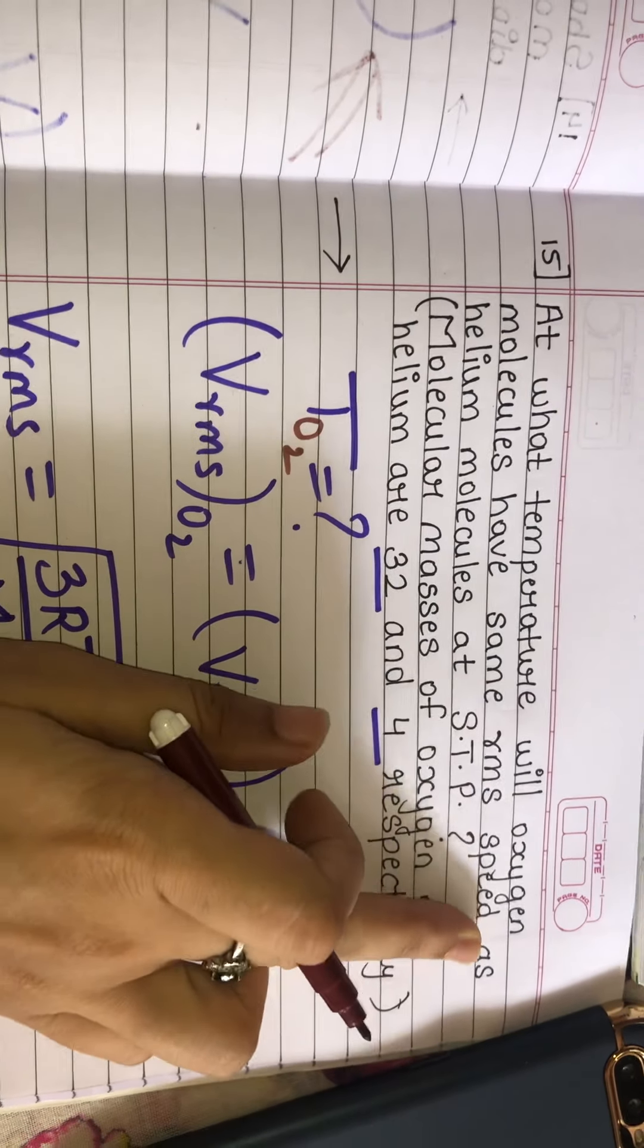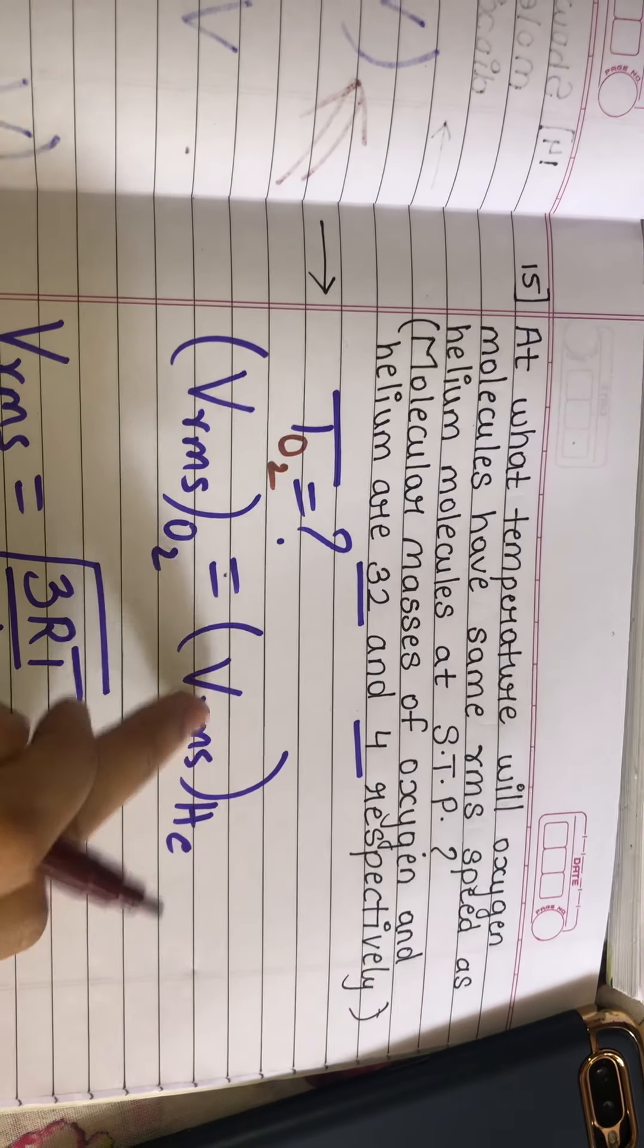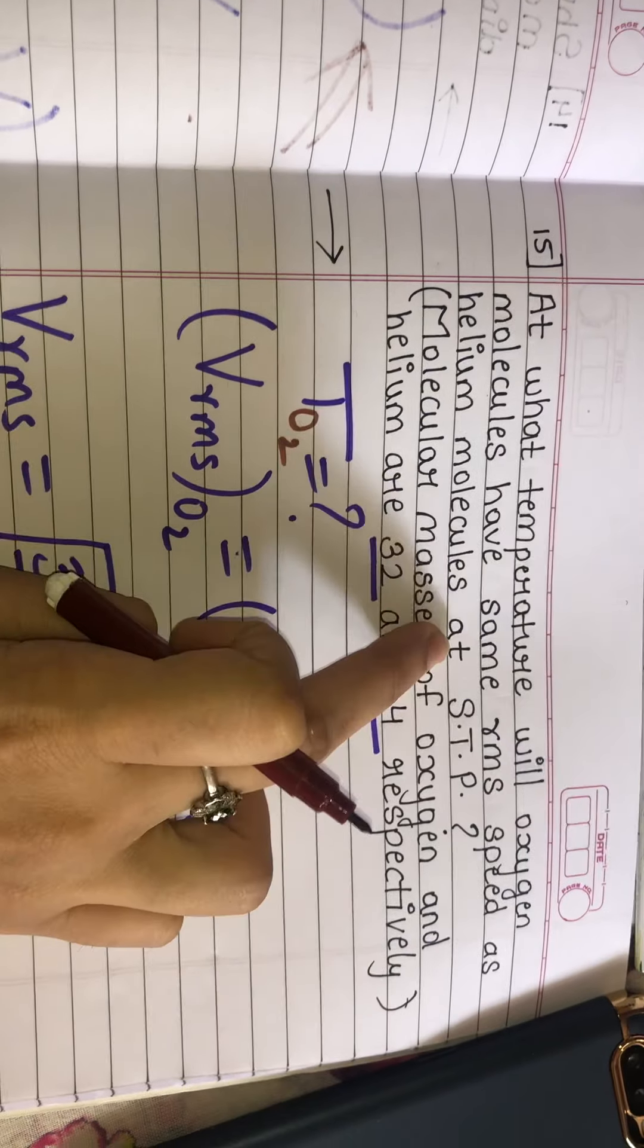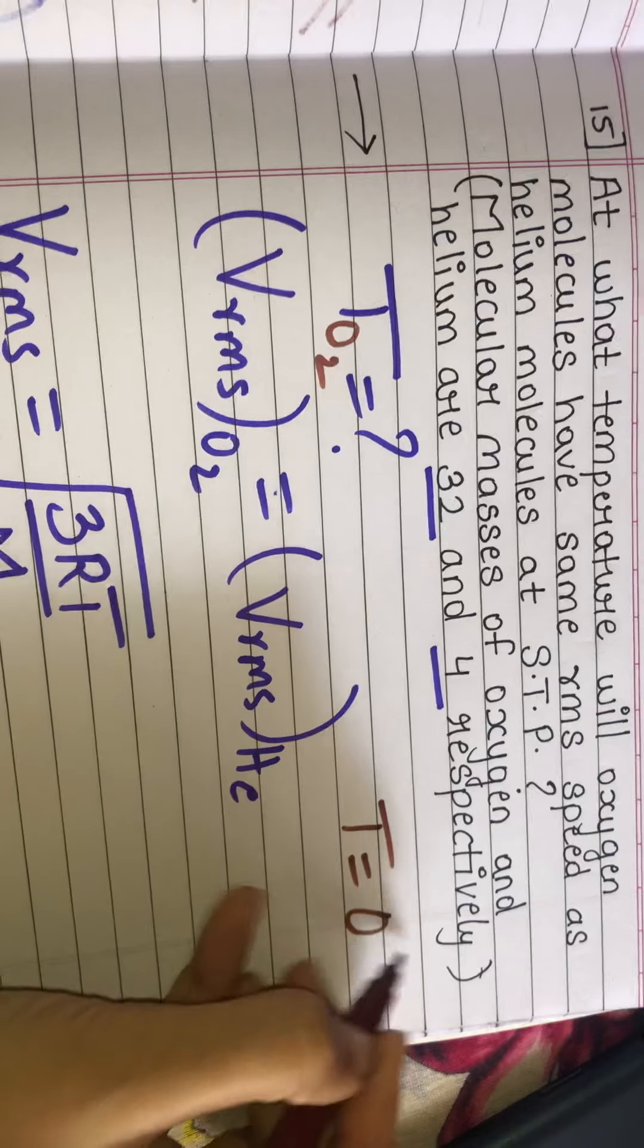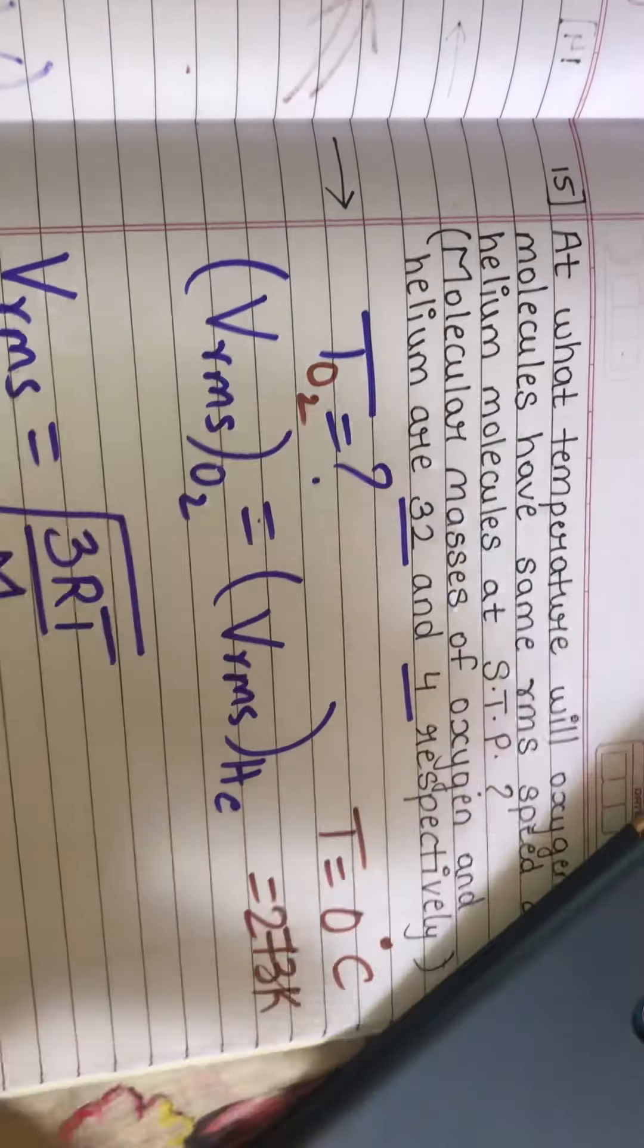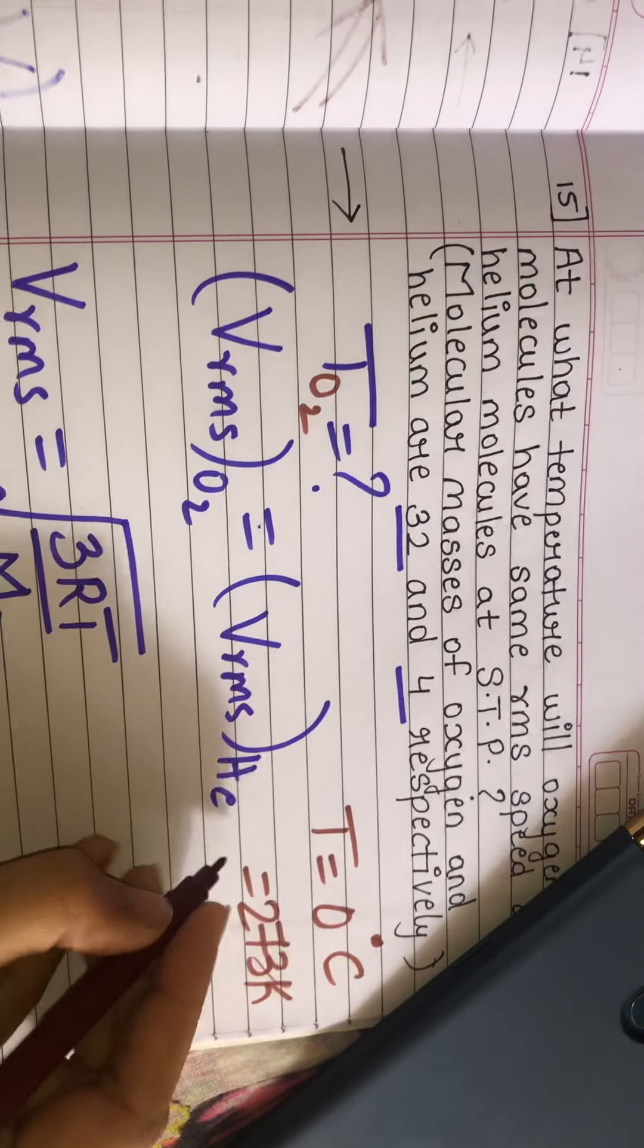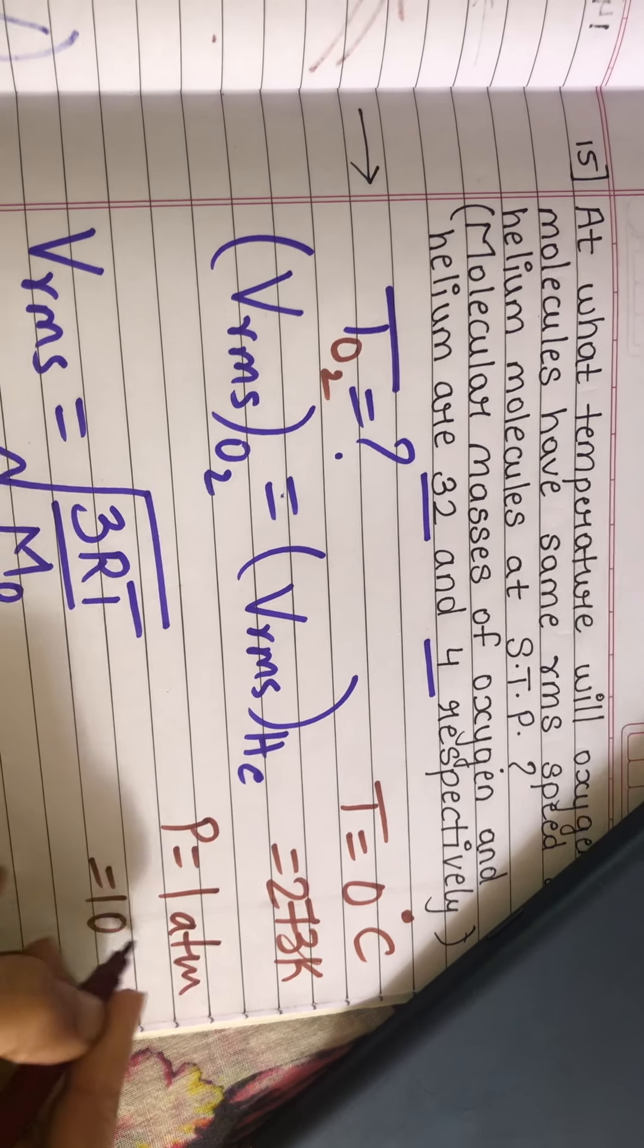Helium molecules are at standard temperature and pressure. Standard temperature is 0 degrees Celsius, which is 273 Kelvin. Standard pressure is 1 atmospheric pressure, which equals 10 to the power of 5 Pascal. For helium, the temperature is 273 Kelvin.